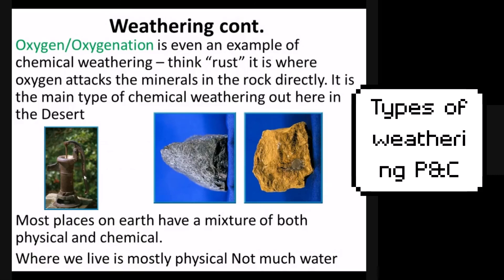Most places on earth have a mixture of physical and chemical weathering — you won't find a place that only has chemical weathering, because physical weathering is still occurring as well. The more water you have, the more chemical weathering you're likely to have; the less water, the more physical weathering. No matter what, there is oxygen on earth, so you're always going to have oxygenation, but keep in mind this is a much slower process than hydrolysis or carbonation.